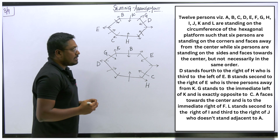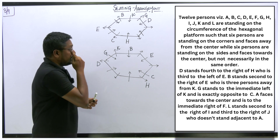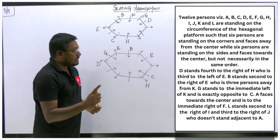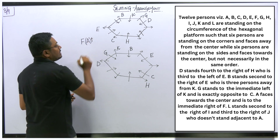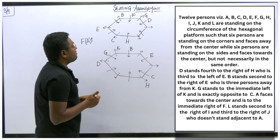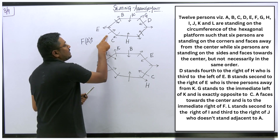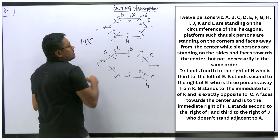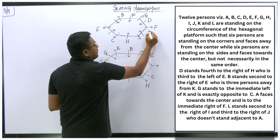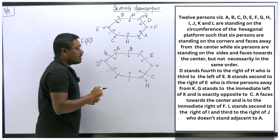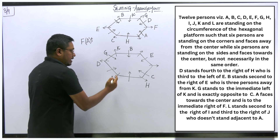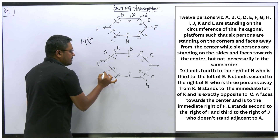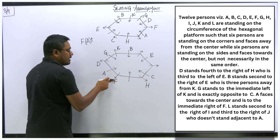A faces towards the center and is to the immediate right of F. So F's right-hand side should be A, and A must be a side-position person facing the center. I identify the correct placement in both diagrams where F is followed immediately by A on the right, with A facing the center.